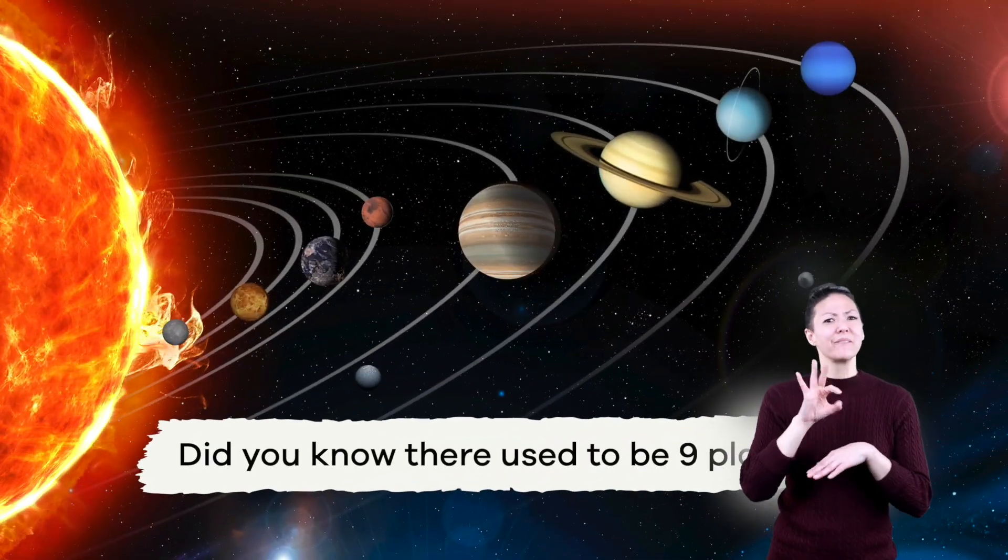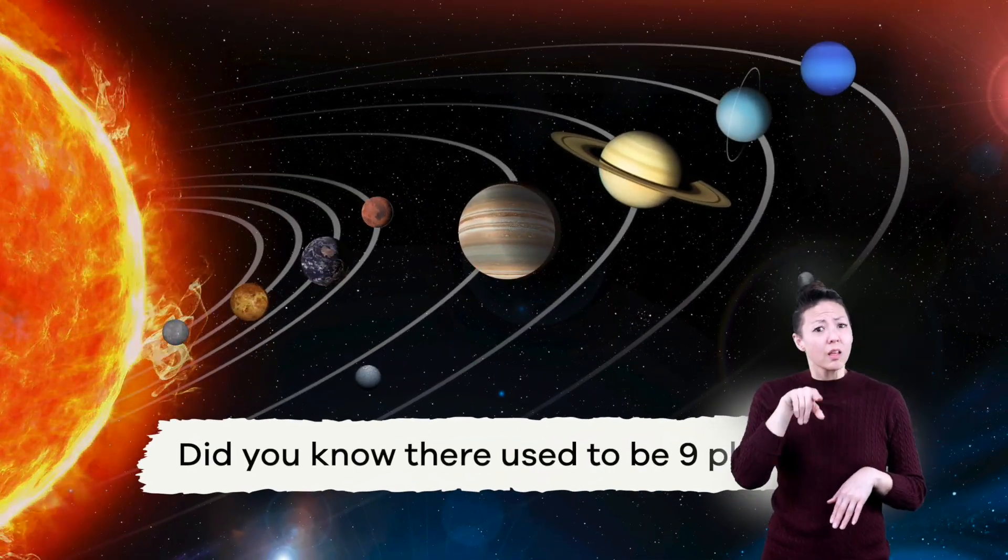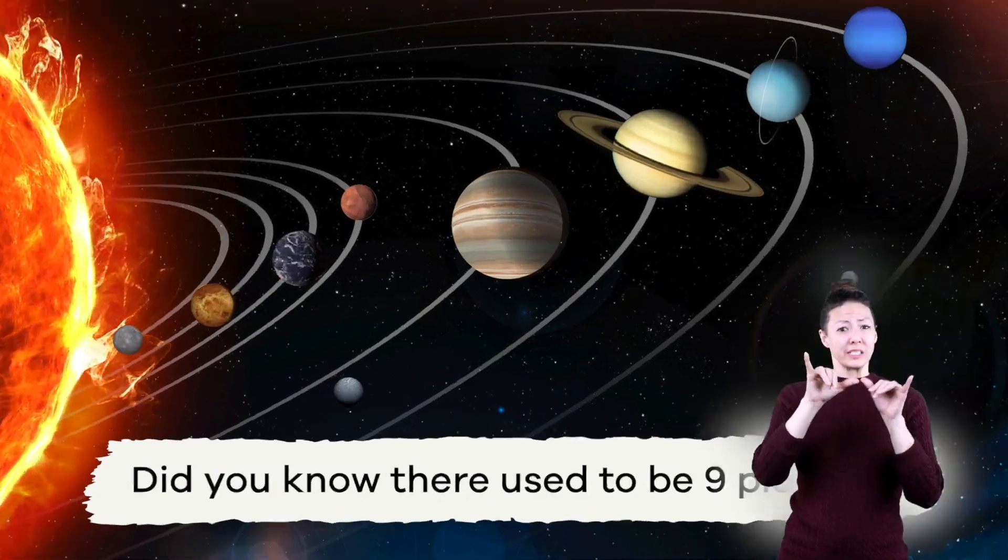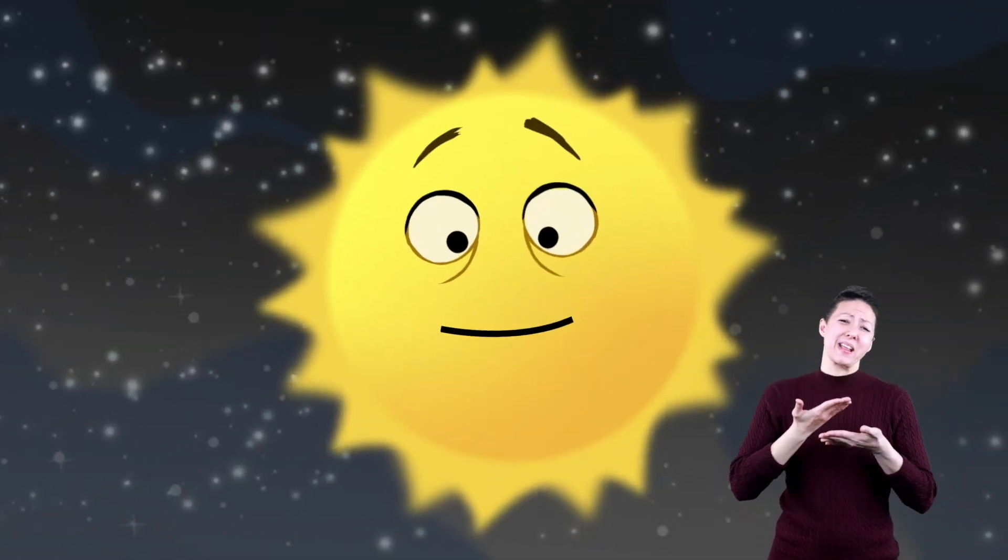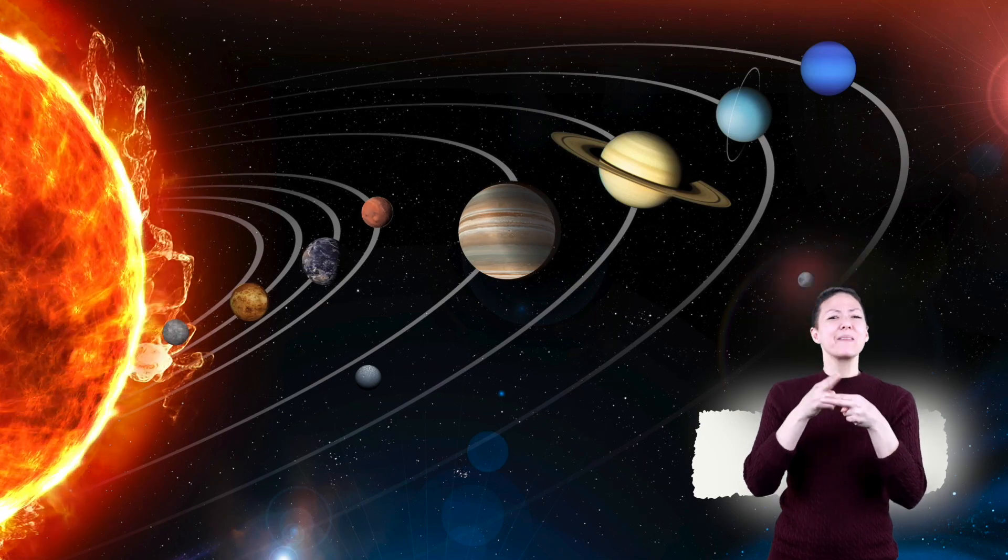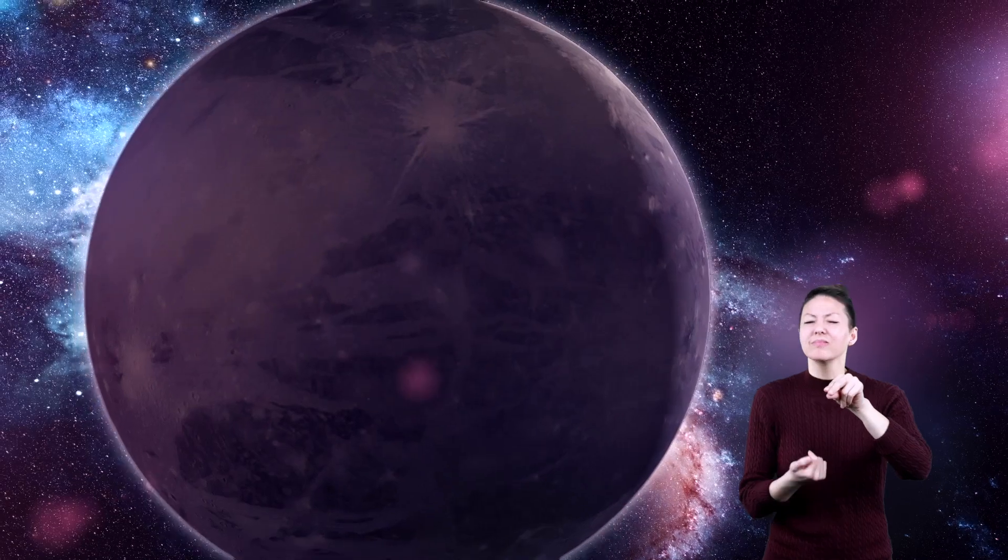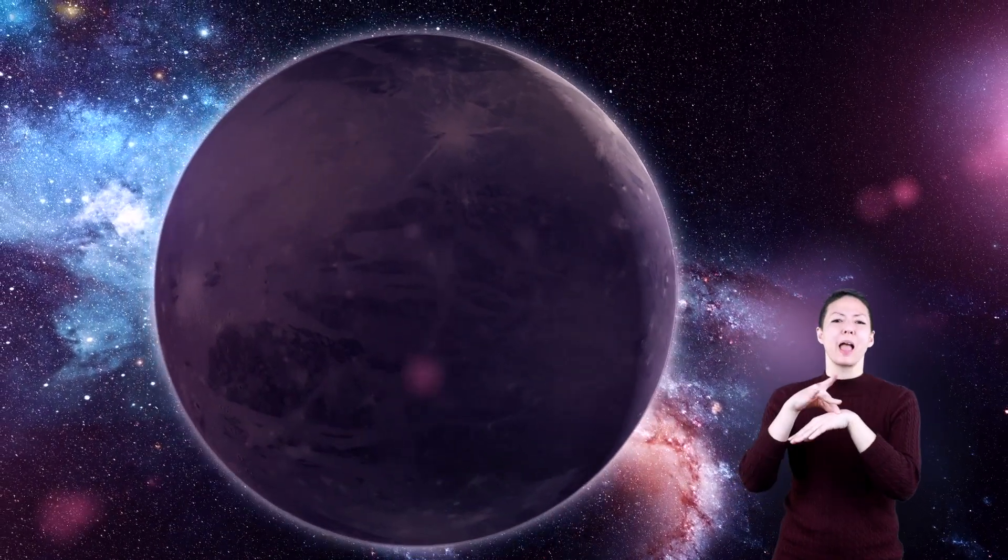Cool planet fact! Did you know that there used to be nine planets in the solar system? My baby! Pluto was the name of that other planet. It didn't disappear. It just got downgraded from a planet to a dwarf planet. Sorry, Pluto.